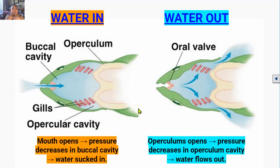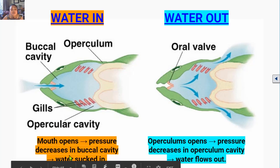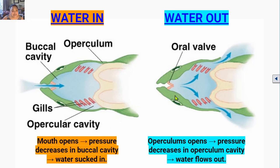To let water in, the mouth opens and the floor of the buccal cavity lowers, decreasing the pressure inside the buccal cavity and causing water to get sucked in. Then the mouth closes and the floor of the buccal cavity rises, increasing the pressure inside the buccal cavity. At the same time, muscles cause the operculum to open, decreasing the pressure inside the operculum cavity. Water then moves from the buccal cavity over the gills into the operculum cavity and out through the operculum — this is how unidirectional pumping happens.